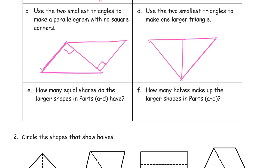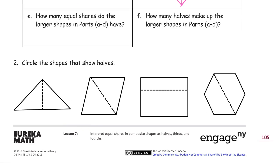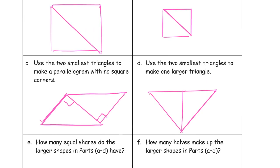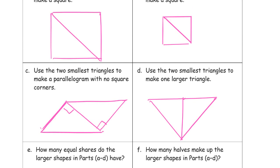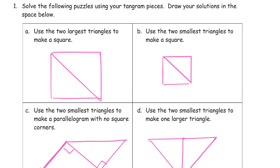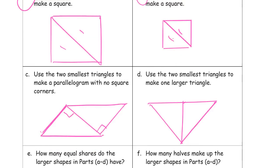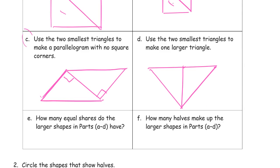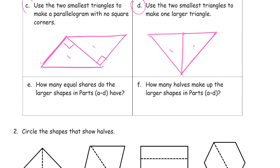Just try to solve it first with the puzzle pieces and then try and draw a picture of the part of the puzzle that you solve. So how many equal shares do the larger shapes in parts a through d have? Well, in a which is this one here, there's two equal shares. In part B, there's two equal shares again. In part C, you're using two equal triangles, and part D using two equal triangles. So they all have two equal shares.